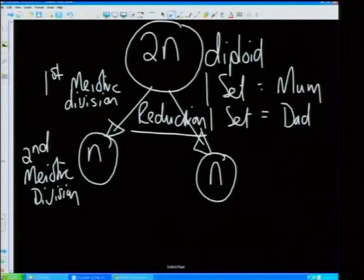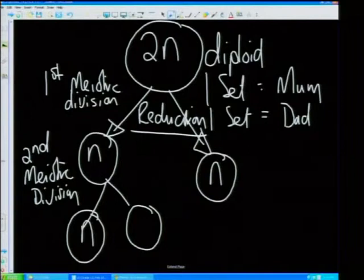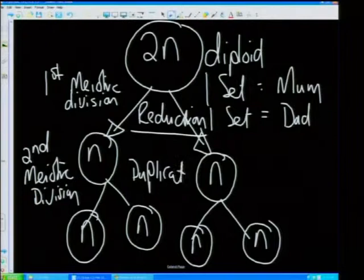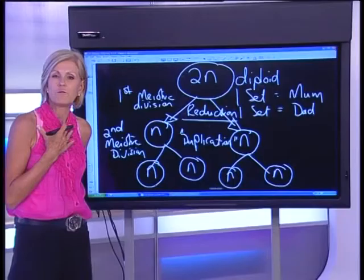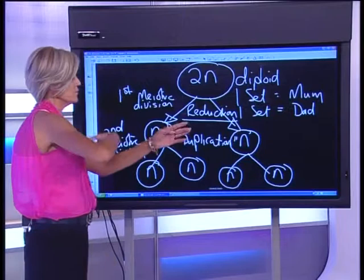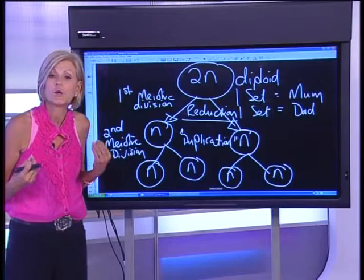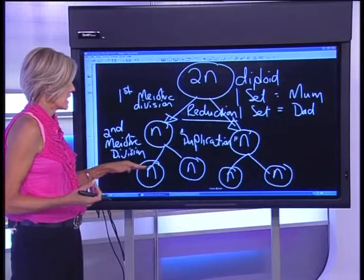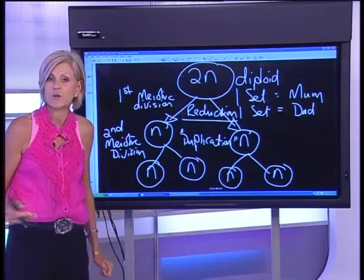In the second meiotic division, we take the haploid cell and it duplicates itself. I'll write 'duplication' in inverted commas because that's my term for it. The second meiotic division is very similar to mitosis — what you start off with, you duplicate, so you have an identical copy. The reason we do this is that in sperm, during spermatogenesis, which you'll cover when you do reproduction.